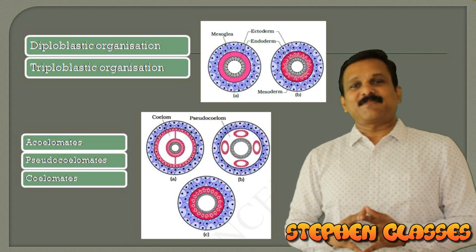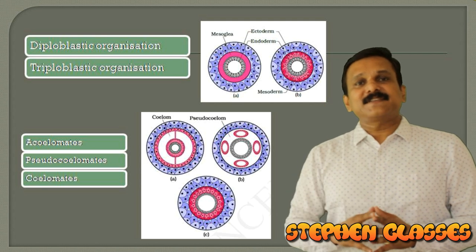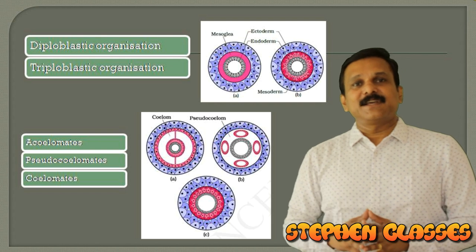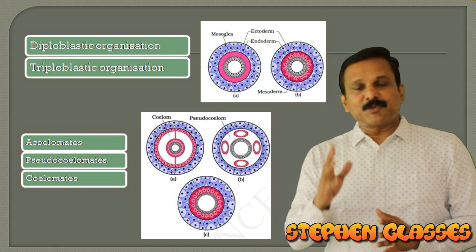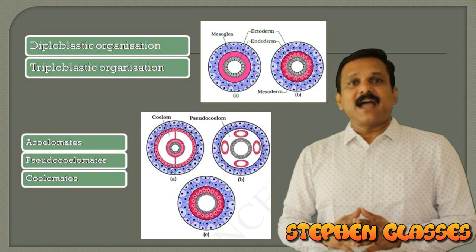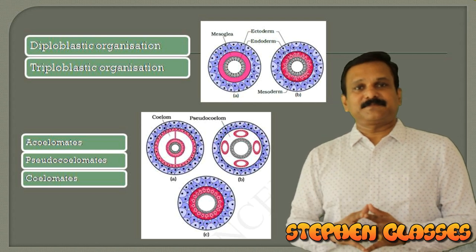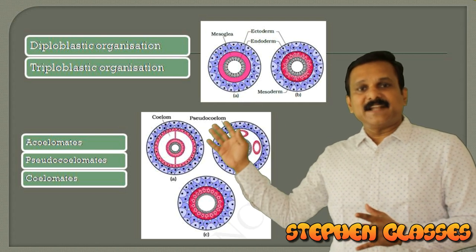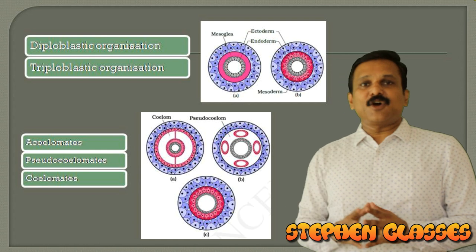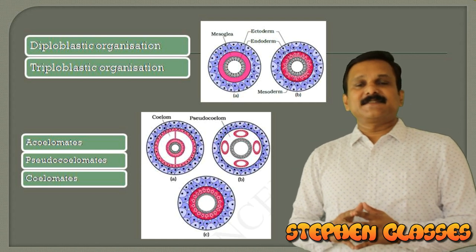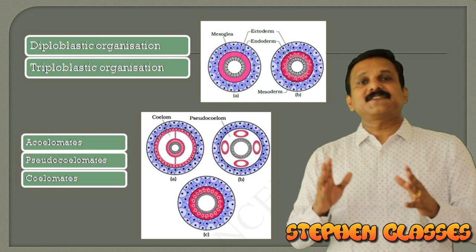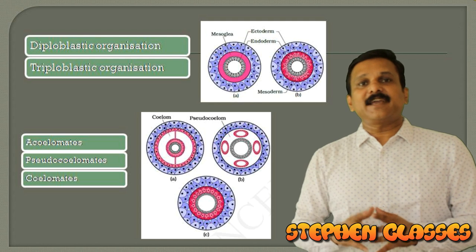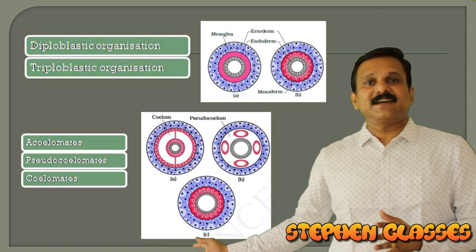According to coelom, animals are classified. The coelom is a true body cavity derived from mesoderm and also lined by mesoderm. Animals are classified into acoelomates, pseudocoelomates, and coelomates. Acoelomates have no coelom at all; in the case of phylum Platyhelminthes, even though they have three germ layers, they do not form a coelom, as shown in picture C.